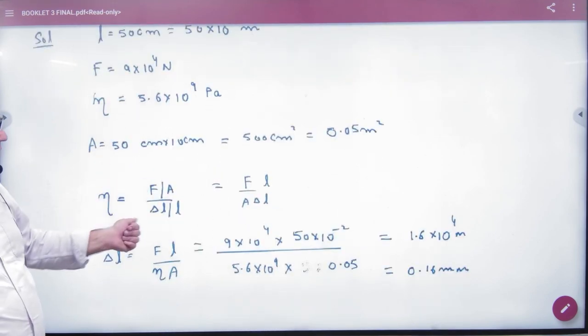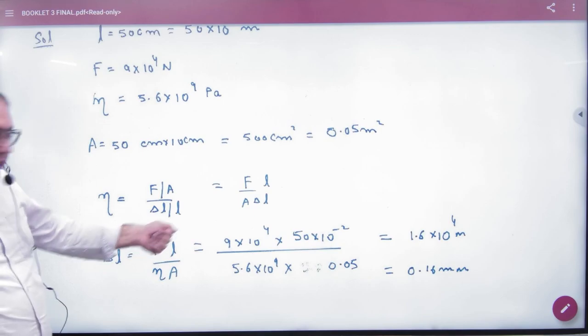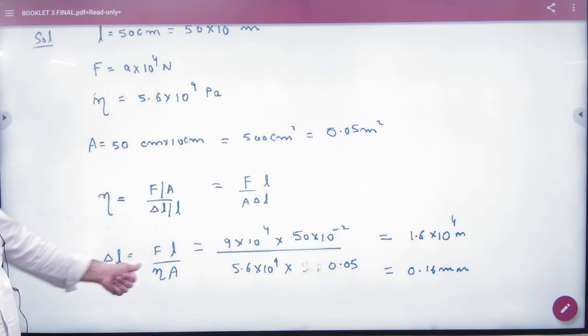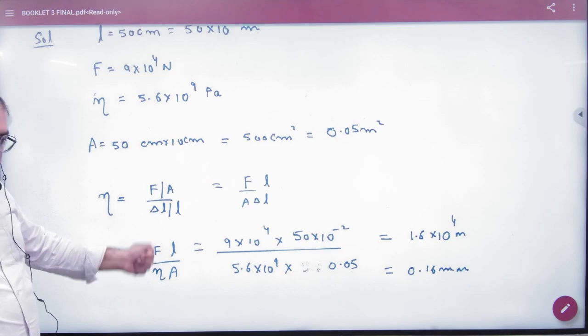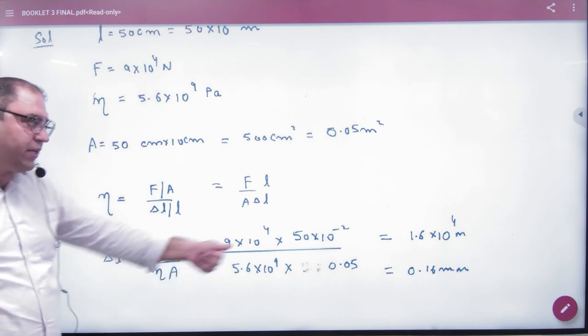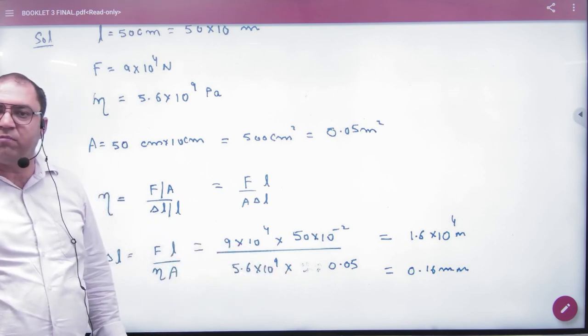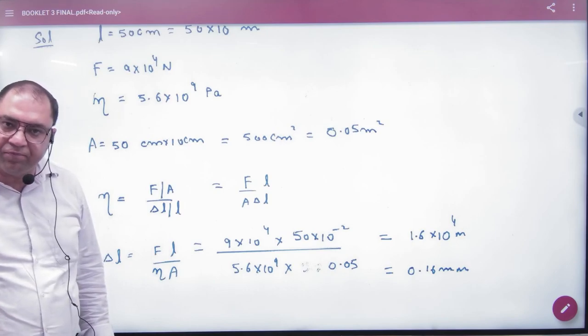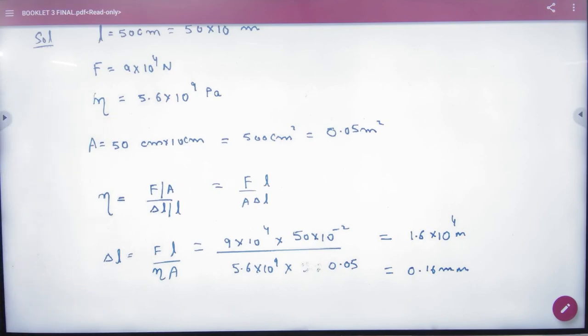What is the formula? Force by area divided by delta L by L. So delta L is unknown. Force applied, L is given, area is known, and eta is given. We can find the answer. So this is a problem which we have not done. So I will get it clear.